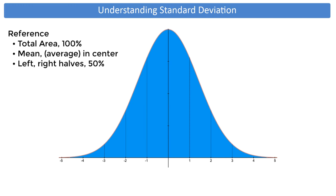The total area underneath the normal curve is 100%. The middle of the curve is where the mean, or average, value is. It follows that the left half and the right half of the area under the curve are each 50%.